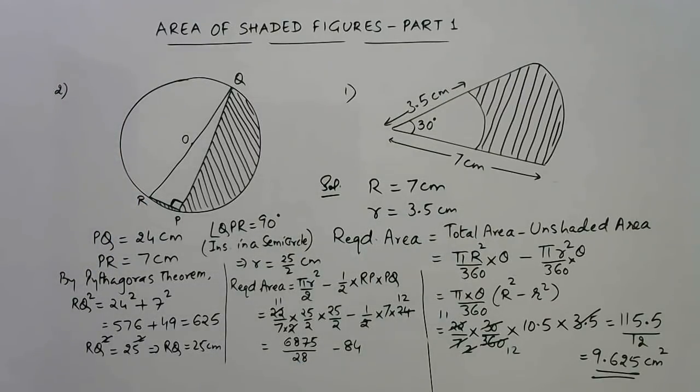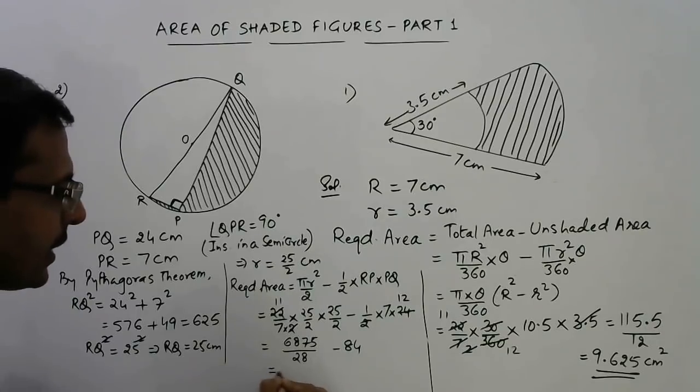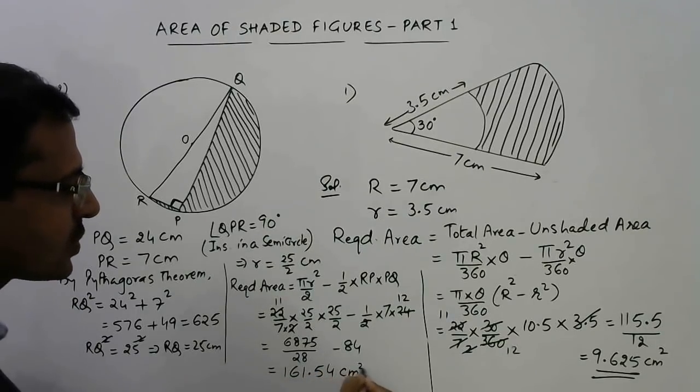I have simplified the calculation for you. After this it is just a problem of taking LCM and dividing finally to get the final answer. The answer you will get is 161.54 cm².